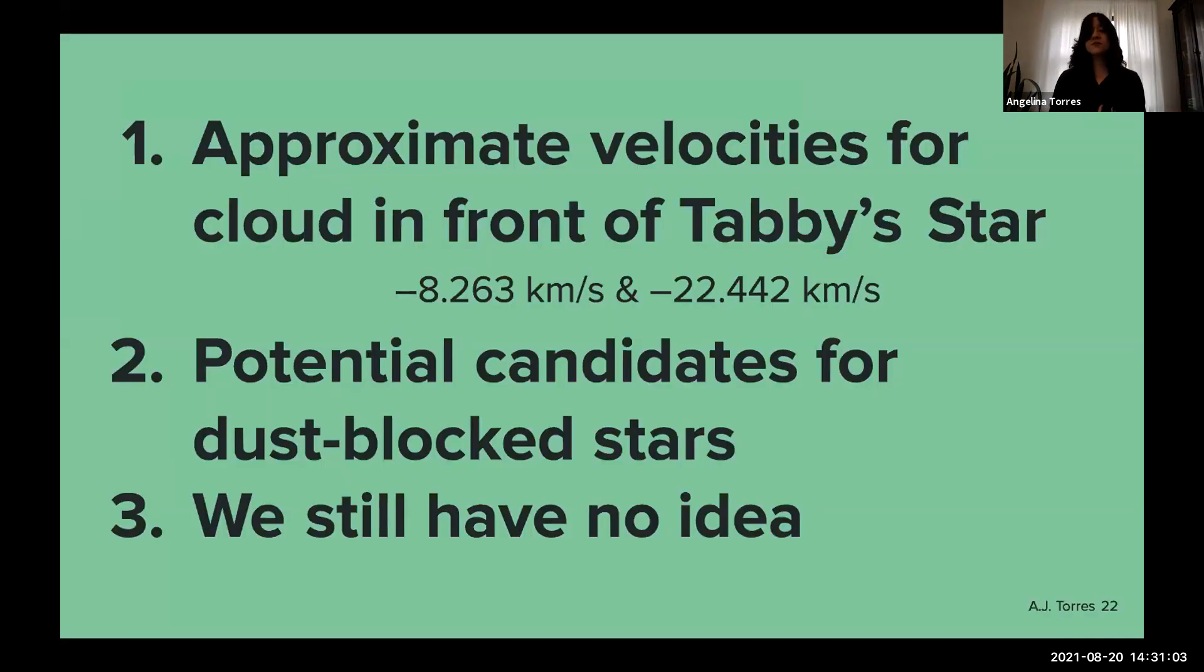One, we have approximate velocities for the cloud that's in front of Tabby's star. These characteristic velocities are about minus 8.263 kilometers per second, minus 22.442 kilometers per second. This is great news. It means that we're a step closer to being able to discover whether these clouds are floating in front of Tabby's star, local to the star, or passing through the solar medium. This is a great step.